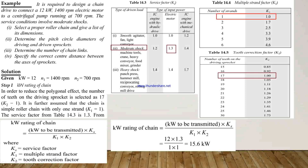Now we see one example to understand the design procedure. It is required to design a chain drive to connect a 12 kW, 1400 rpm electric motor to a centrifugal pump running at 700 rpm. The service conditions involve moderate shocks. We need to: select the proper roller chain and list its dimensions; determine the pitch circle diameters of the driving and driven sprockets; and determine the number of chain links and specify the correct center distance. Given data: Power = 12 kW, n1 = 1400 rpm, n2 = 700 rpm.